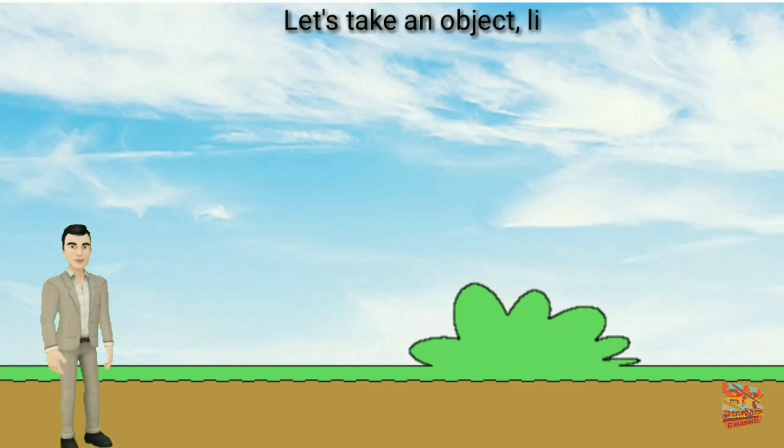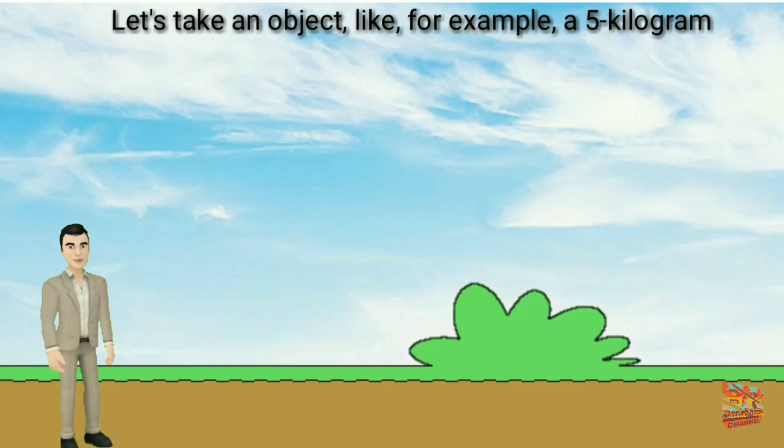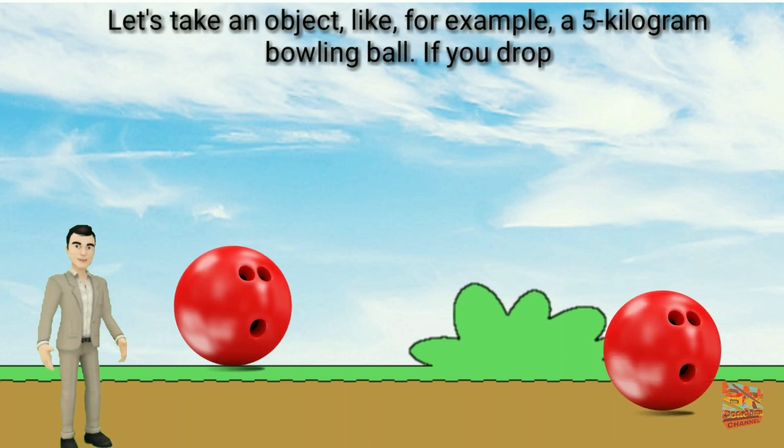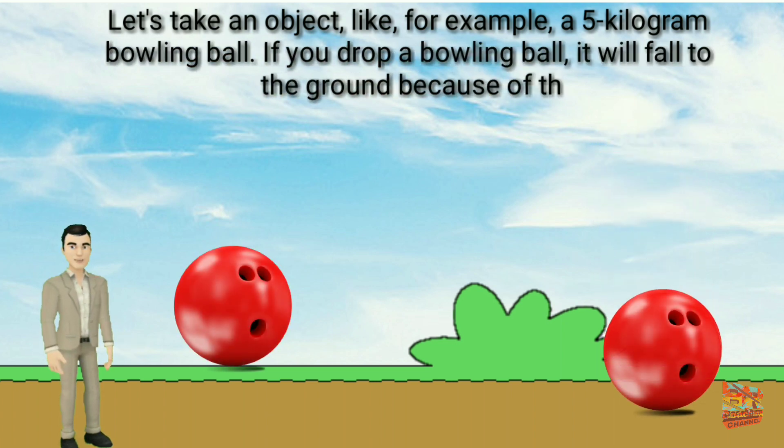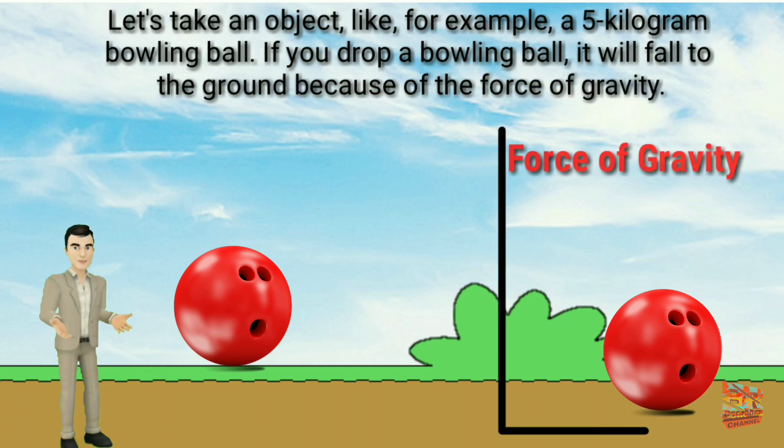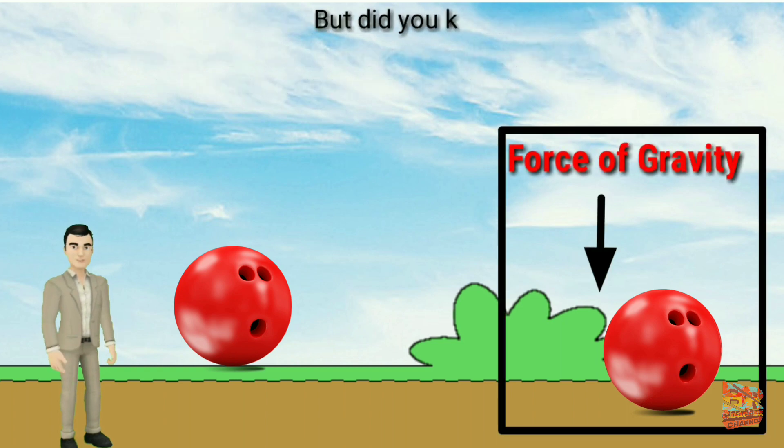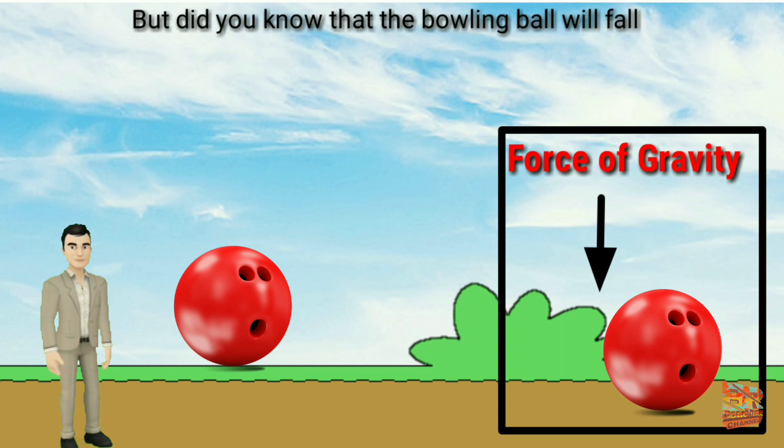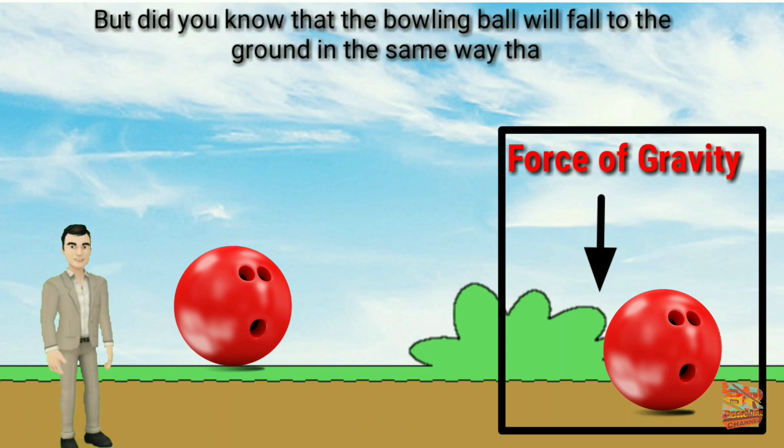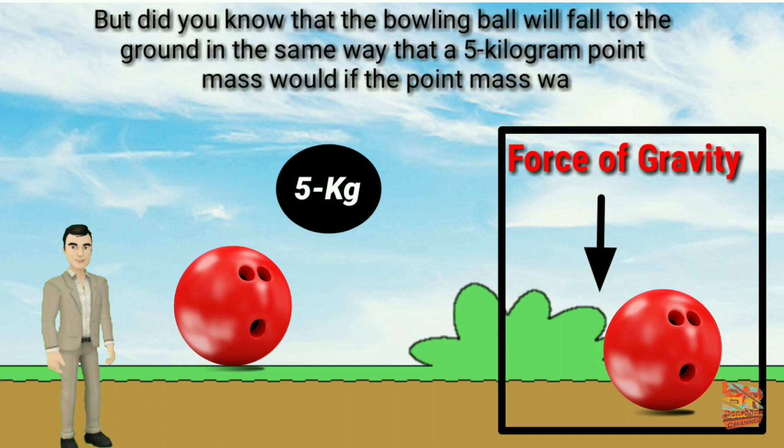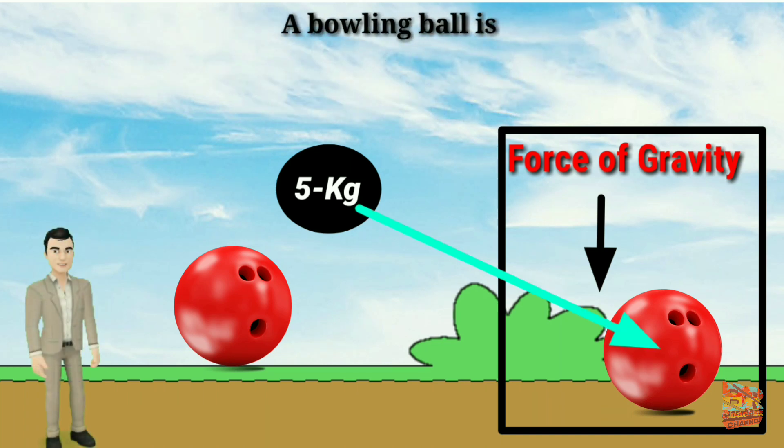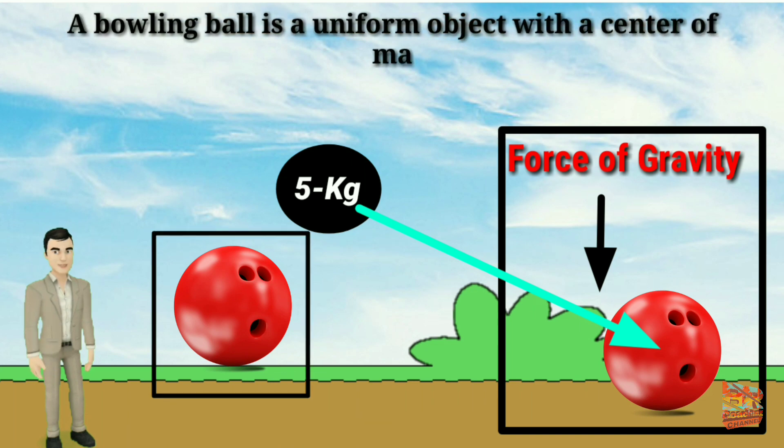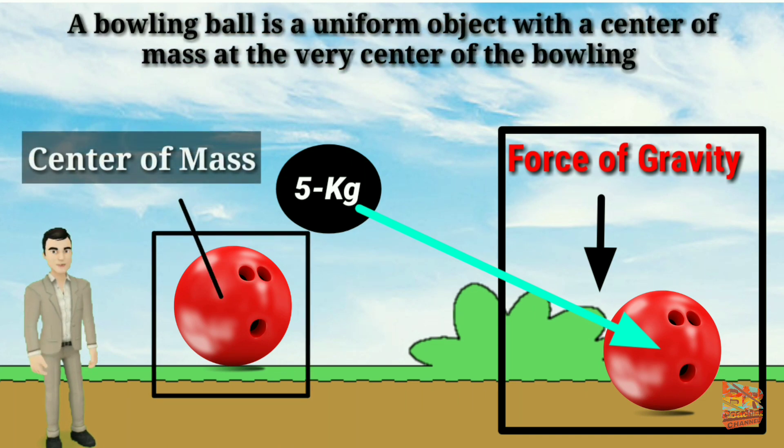Let's take an object, for example, a 5 kilogram bowling ball. If you drop a bowling ball, it will fall to the ground because of the force of gravity. But did you know that the bowling ball will fall to the ground in the same way that a 5 kilogram point mass would, if the point mass was placed at the very center of the bowling ball? A bowling ball is a uniform object with a center of mass at the very center of the bowling ball.